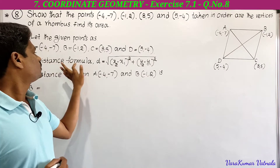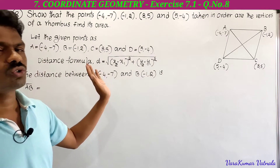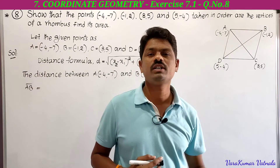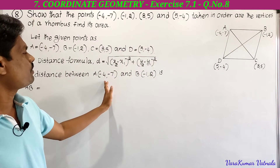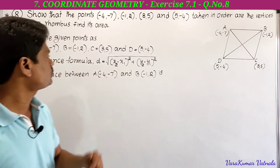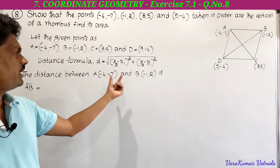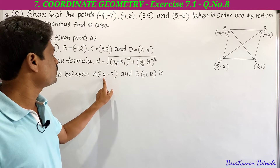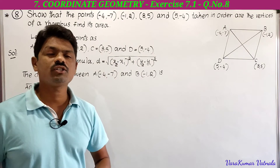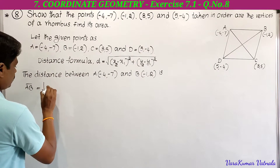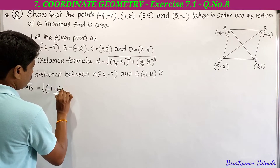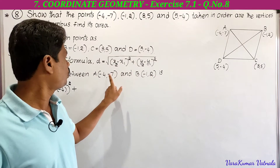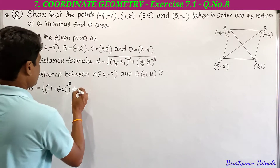The distance formula is: d = √[(x₂ − x₁)² + (y₂ − y₁)²]. To find AB, the distance between A(−4, −7) and B(−1, 2), let (x₁, y₁) = (−4, −7) and (x₂, y₂) = (−1, 2). Substituting: √[(−1 − (−4))² + (2 − (−7))²], which gives √[(−1 + 4)² + (2 + 7)²].